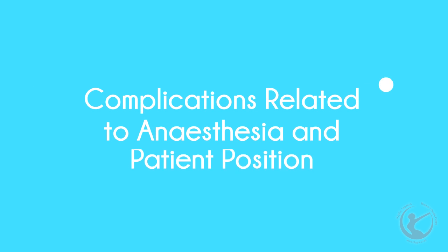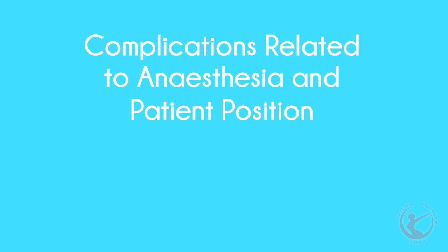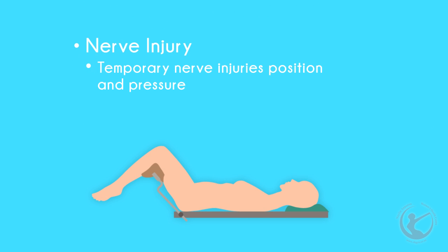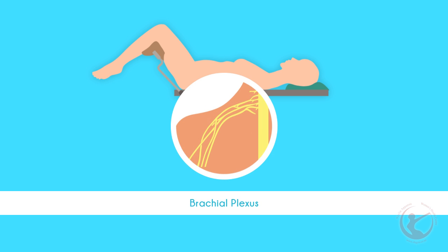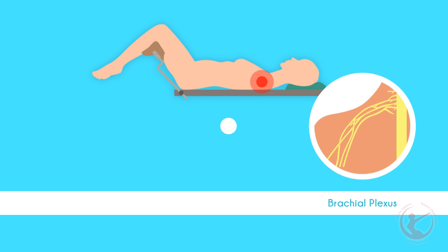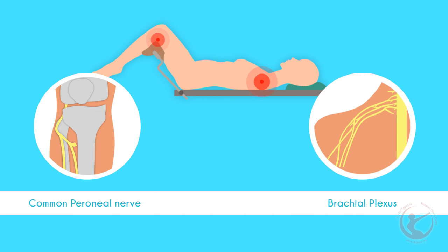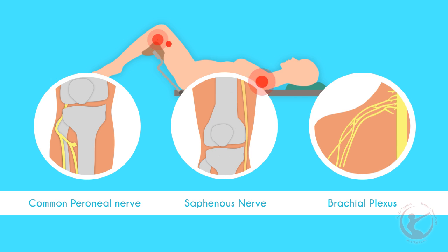Complications related to anesthesia and patient position. Nerve injuries — transient nerve injuries may occur during any procedure with positioning, affecting the brachial plexus, common perineal nerve, and also the saphenous nerve.